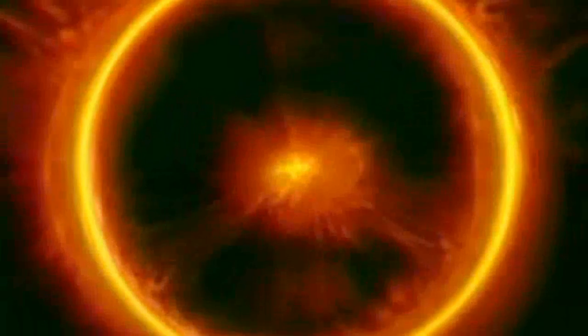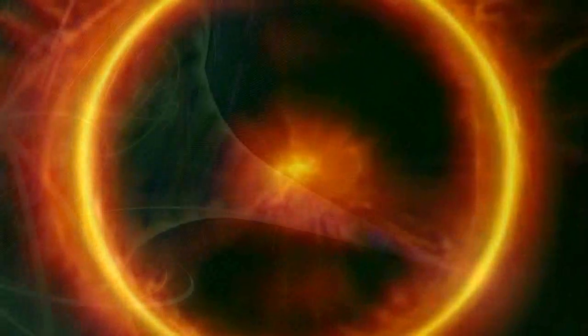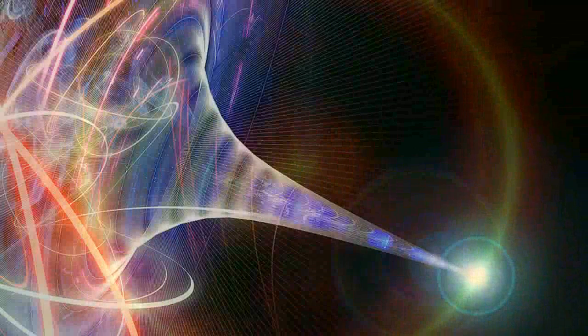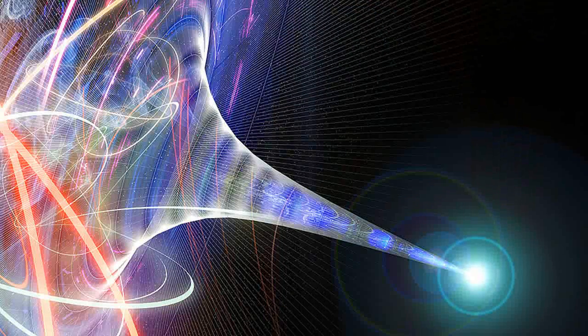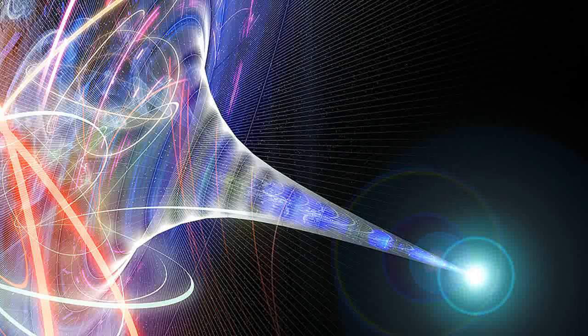The Big Bang took place with the explosion of the point that contained all the matter and energy in the universe. It dispersed into the universe with incredible speed. Out of this explosion came galaxies, stars, planets, our sun, the earth, and the laws of physics themselves were formed.